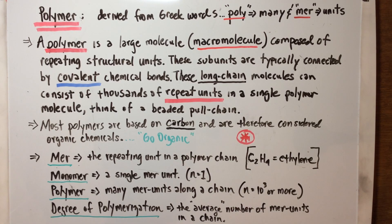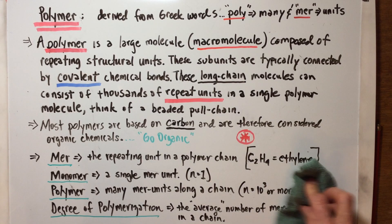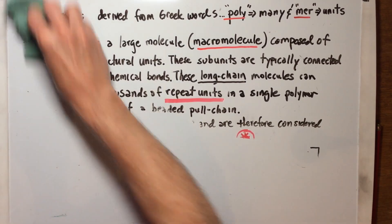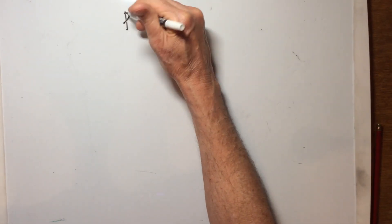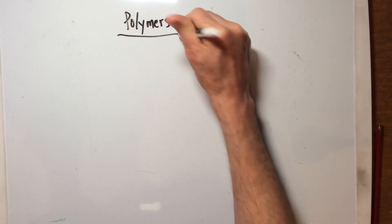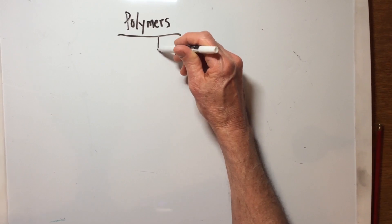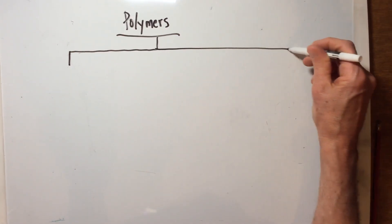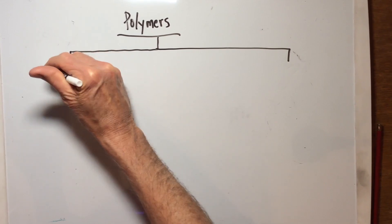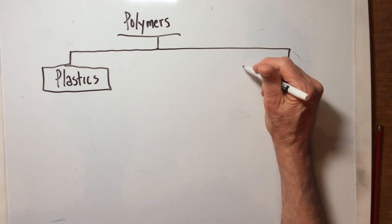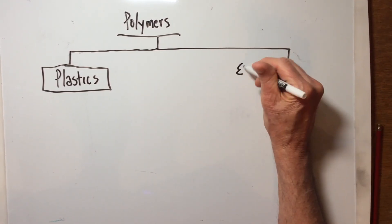I'm going to erase this and I want to kind of build a polymer tree, so to speak, showing where these polymers break down into the basic types. So we're going to start up here at the top, the overall heading of polymers, and then we're going to break this down into two basic subcategories. One we're just going to call plastics, and that's what we're going to spend the most time on.